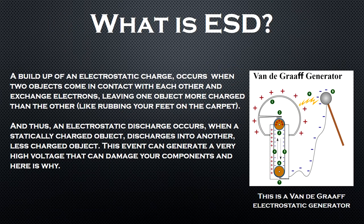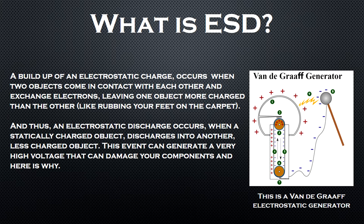A buildup of electrostatic charge occurs when two objects come in contact with each other and exchange electrons, leaving one object more charged than the other. An electrostatic discharge occurs when a statically charged object discharges into another less charged object. This event can generate a very high voltage that can damage your components, and here is why.